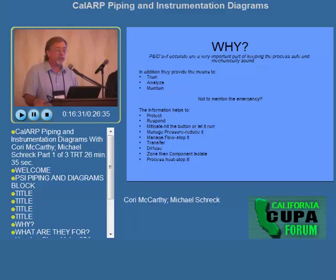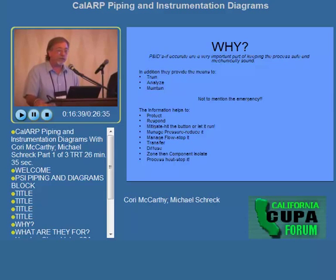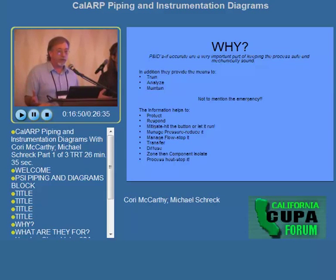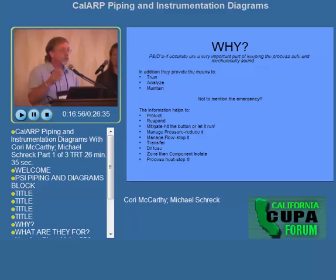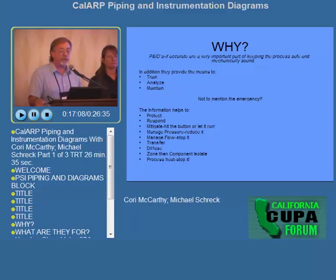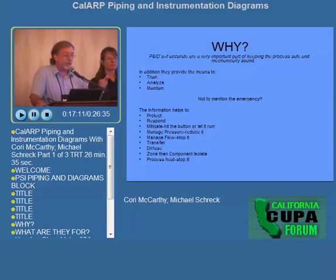Probably only about 10 to 20% of plants have a full response team that understands their ammonia refrigeration system, and many facilities rely on outside responders. So a P&ID is critical. We recommend the company have a bag in their response equipment that they can access during an evacuation — containing plot plans, head count sheets, call lists, and P&IDs. Outside parties have to have the proper information to mitigate effectively, safely, and efficiently.